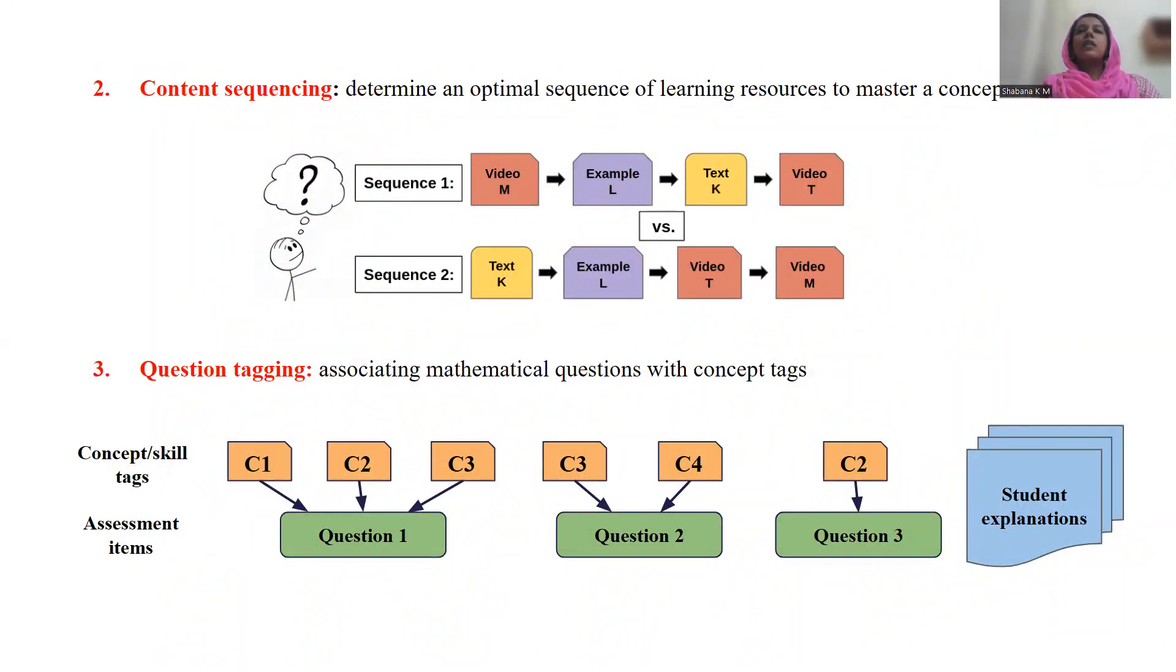When multiple learning resources are available to master a concept, how to determine the right personalized order in which these resources are to be presented to a student in accordance with the individual learning characteristics?